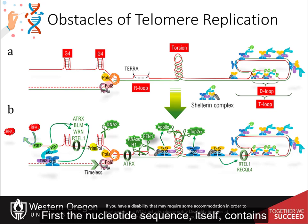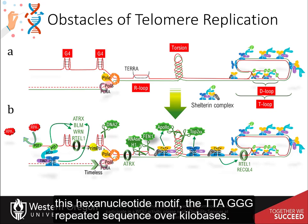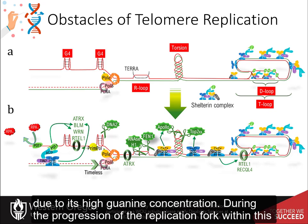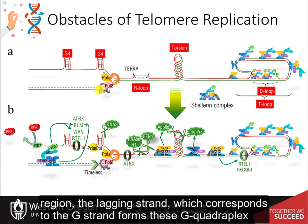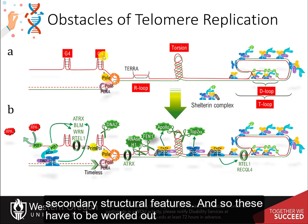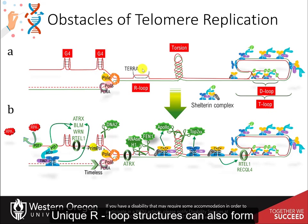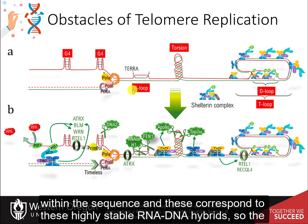First, the nucleotide sequence itself contains this hexanucleotide motif — the TTAGGG repeated sequence over kilobases — and the 5' to 3' strand is named the G strand due to its high guanine concentration. During the progression of the replication fork within this region, the lagging strand, which corresponds to the G strand, forms G-quadruplex secondary structural features, and these have to be worked out before the polymerase is able to do the replication on the lagging strand.